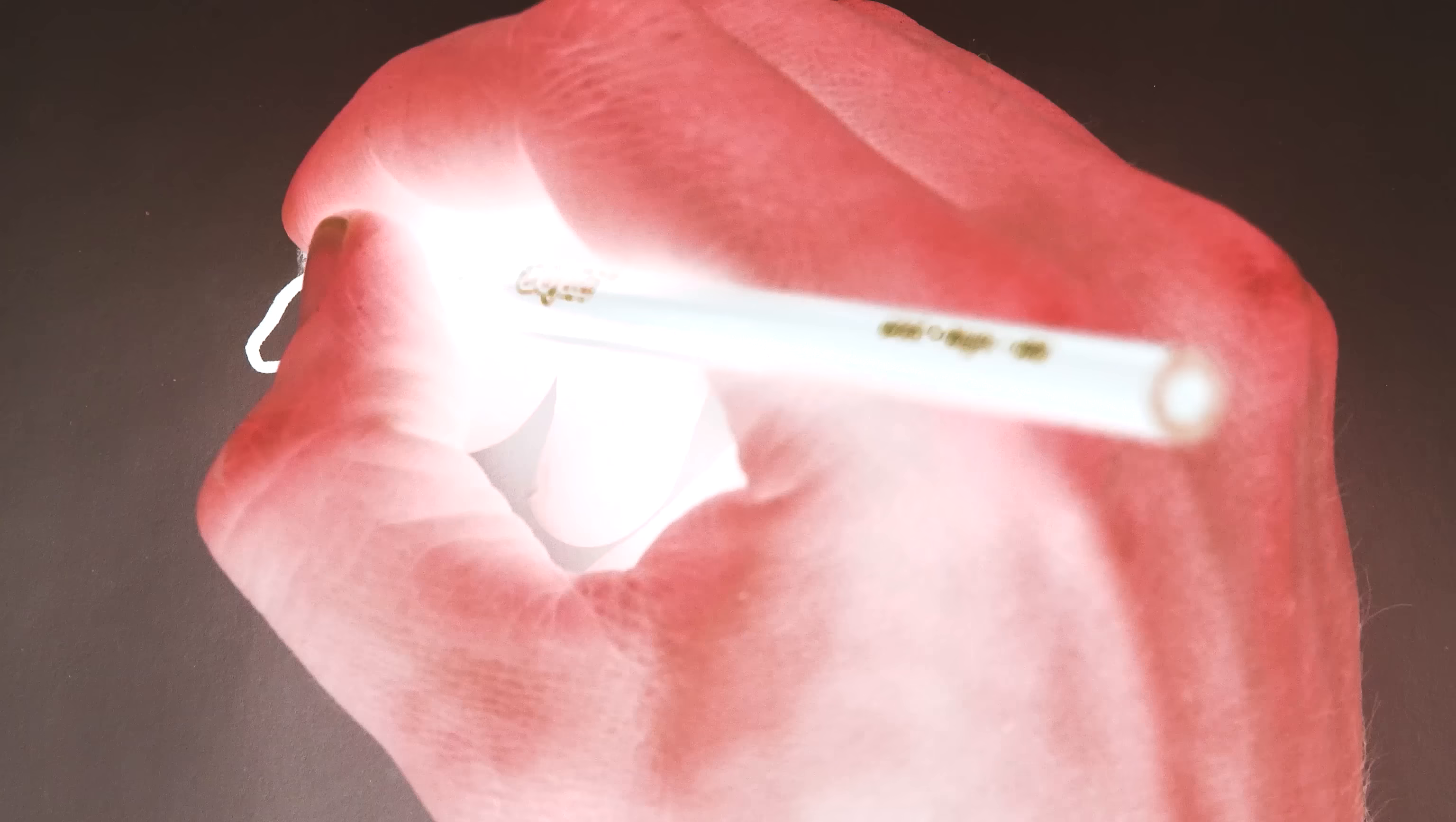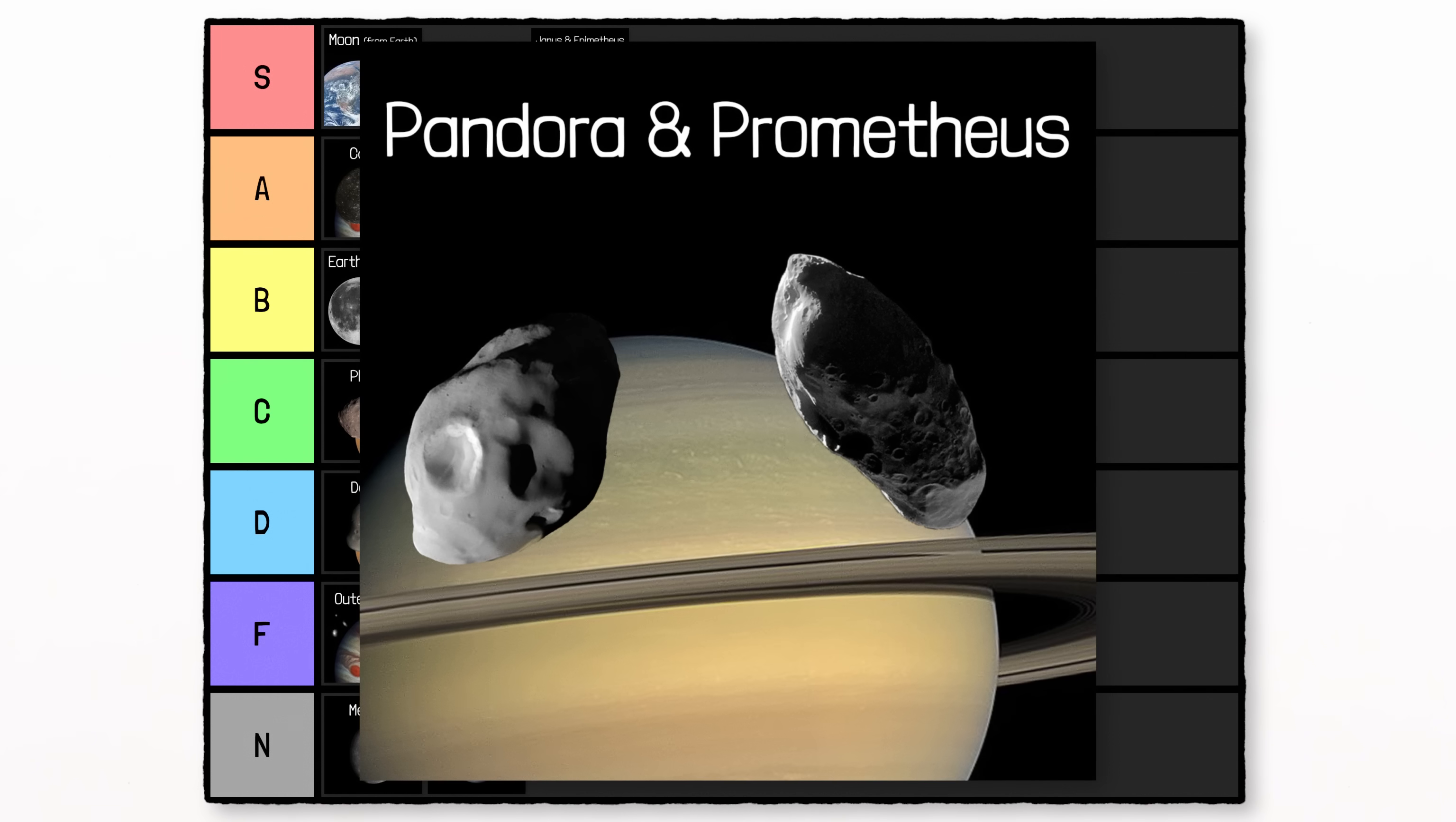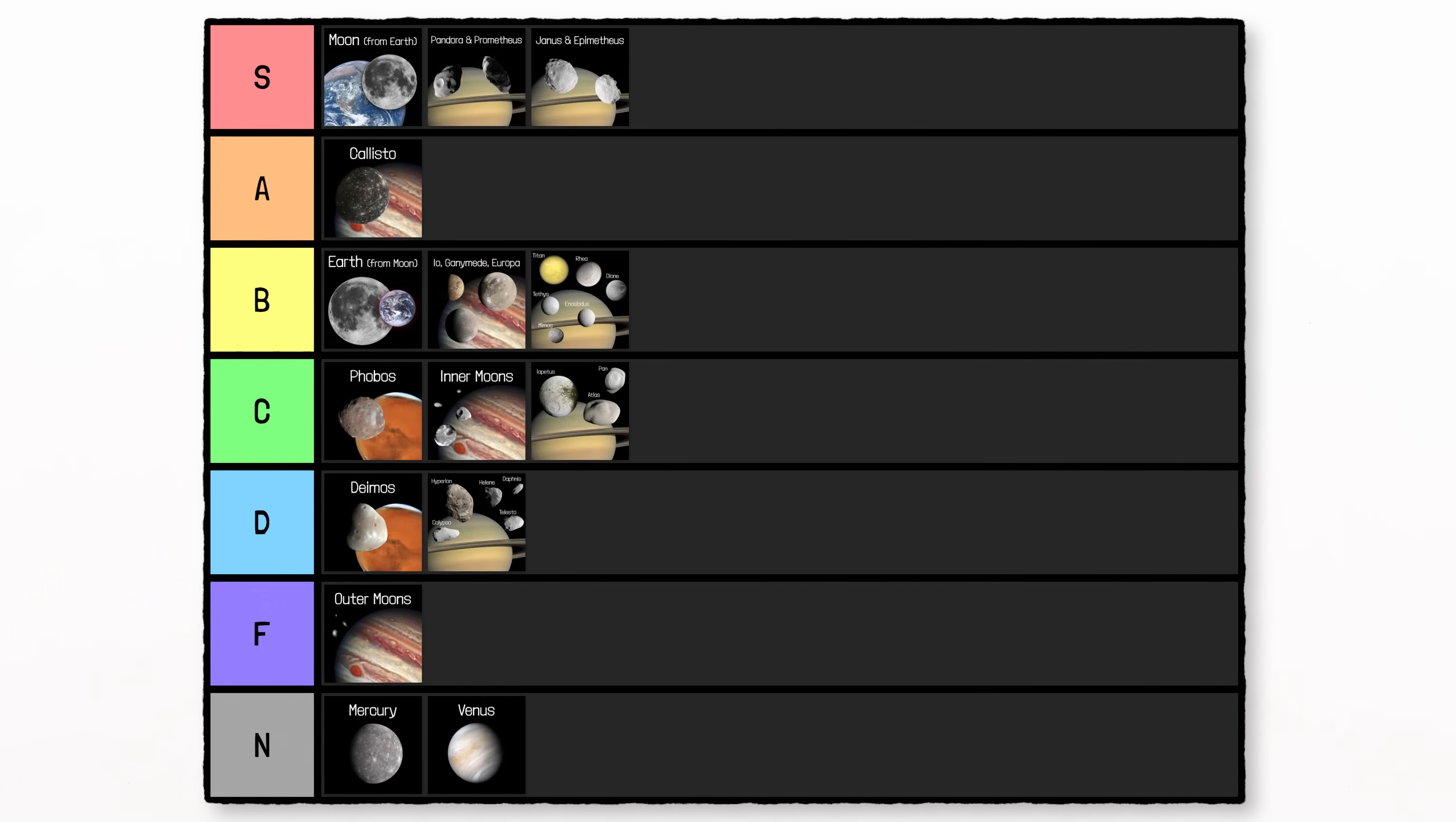But two of them, the moons Pandora and Prometheus, are just the right size to create both total and partial and annular eclipses. They're the only moons in the rest of the solar system we know for sure can do that, other than our moon. Plus, they have potato-like shapes, so partial and annular eclipses would be more visually interesting than our boring spherical moon. S-tier.